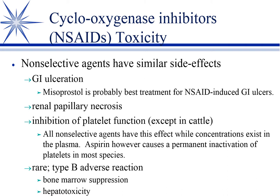Particularly if you have an NSAID-induced ulcer, misoprostol is the anti-ulcer medication that we want to use. We'll also talk about omeprazole, ranitidine, and famotidine — all acid suppressors — as part of an anti-ulcer protocol, but for NSAID-induced ulcers we want to actually replace that missing prostaglandin.